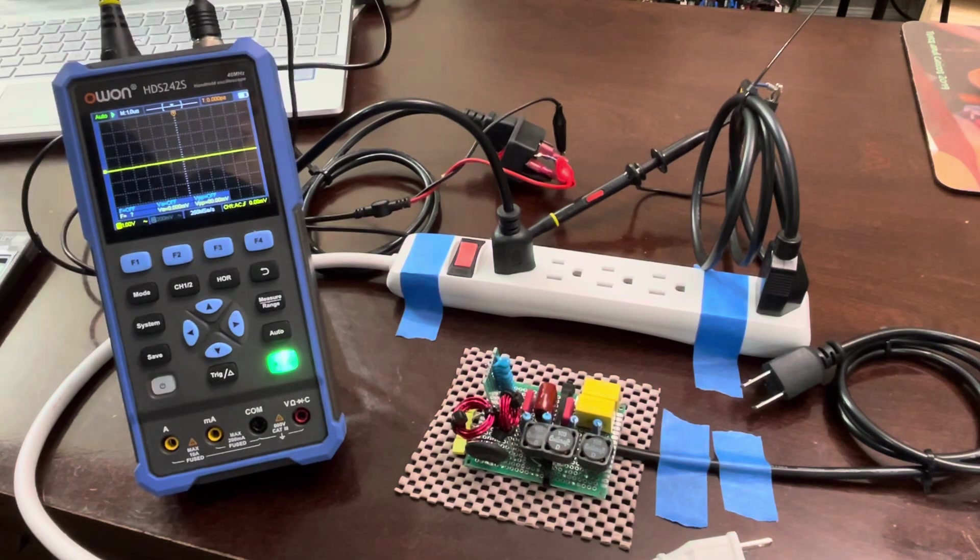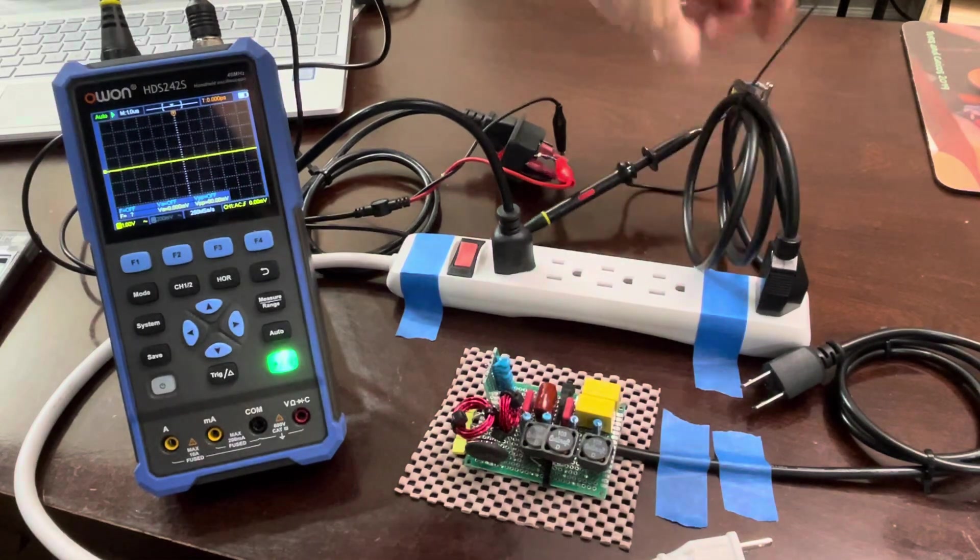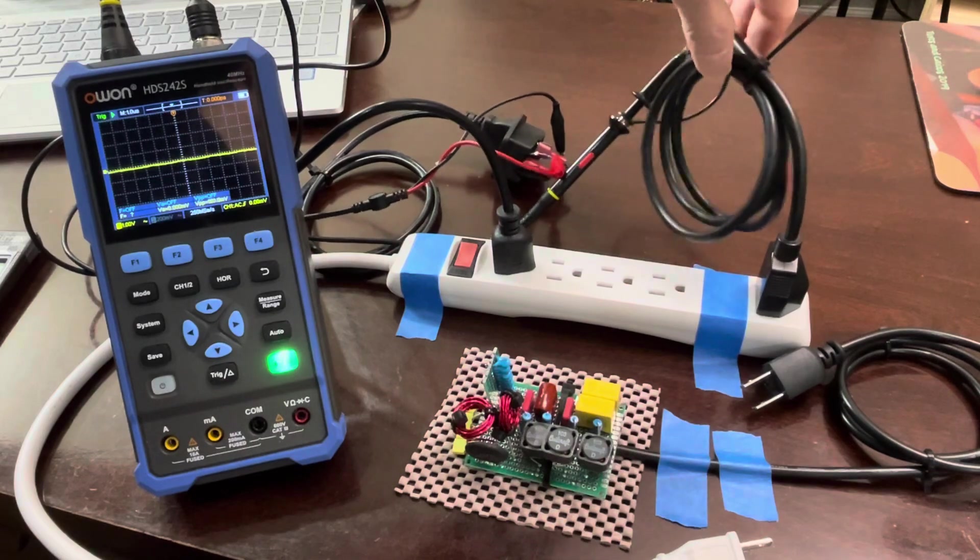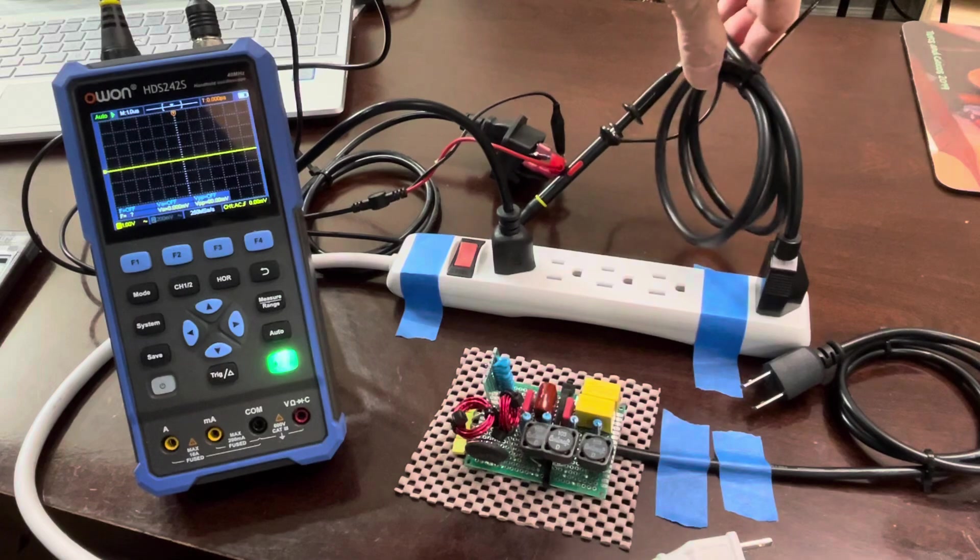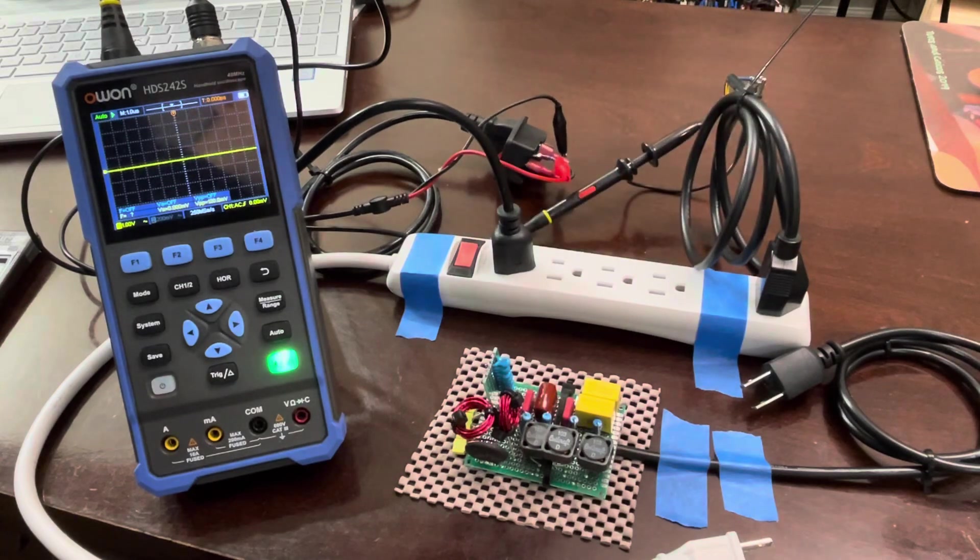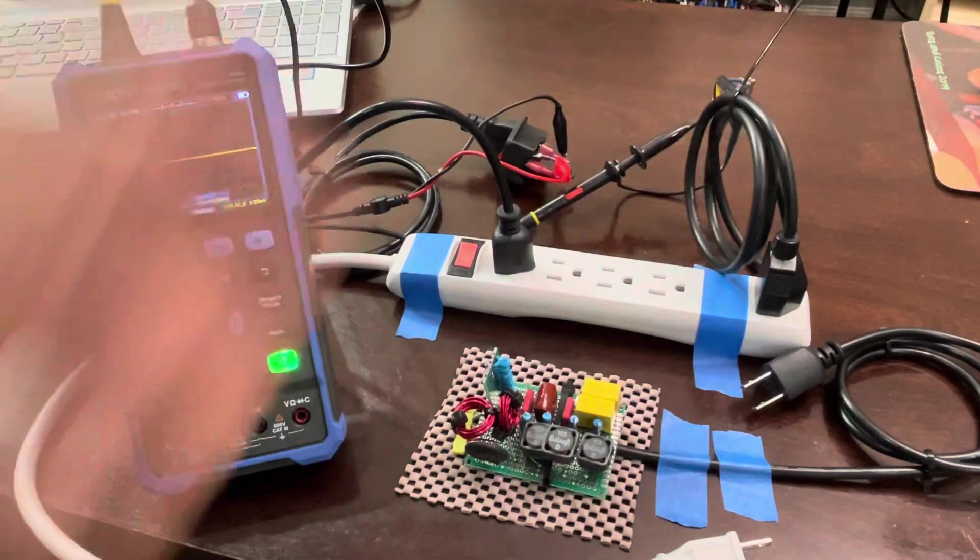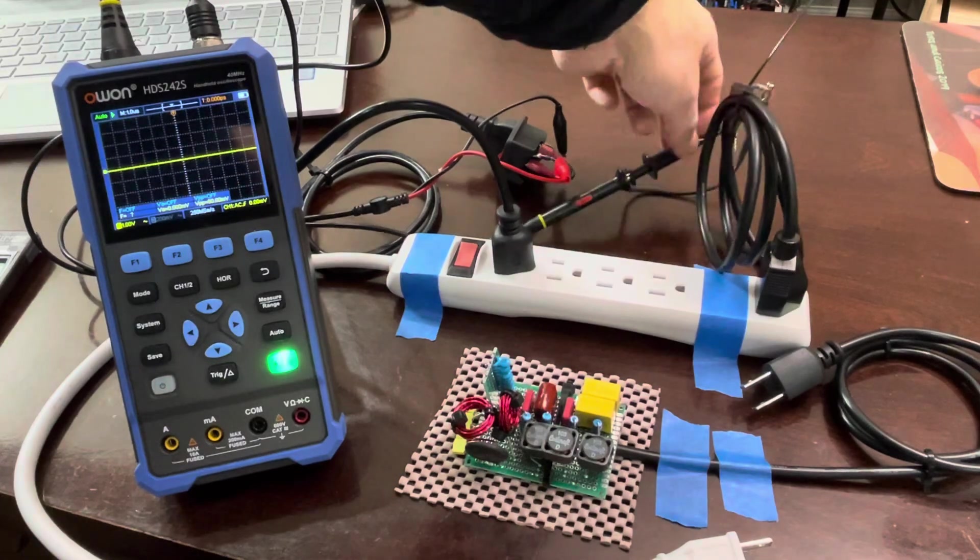That is then connected to a function generator that I have here on my oscilloscope slash function generator. The oscilloscope itself is connected to this power cord. This is representing your sensitive audio device - your headphone amplifier, your turntable preamp, whatever it is you want to keep quiet from noise. So the oscilloscope probes are connected there.